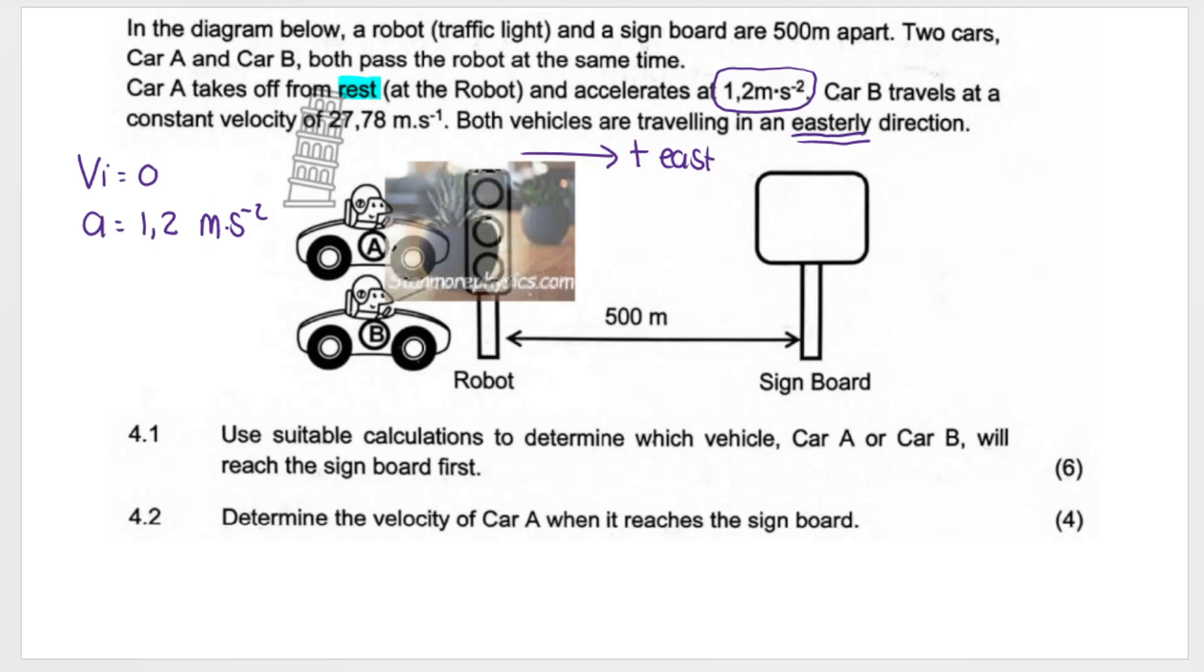It says that Car B, on the other hand, we're contrasting the cars, travels at a constant velocity of 27.78 meters per second.